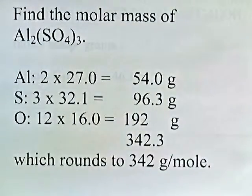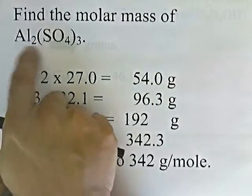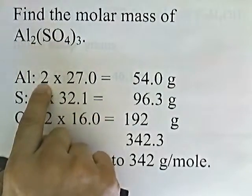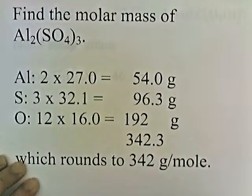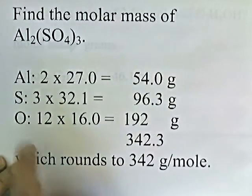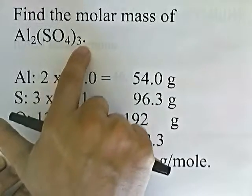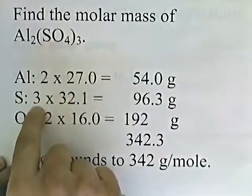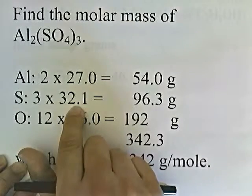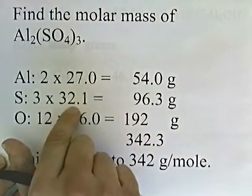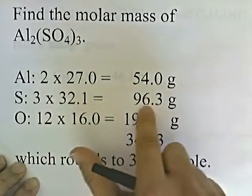Let's find the molar mass of aluminum sulfate. There are two aluminums. On the periodic chart, aluminum has a mass of 26.982, but rounded to three significant figures that becomes 27.0. Sulfur: there are three sulfurs — the three out front is distributed to the sulfur. Sulfur is listed as 32.066, which rounds to 32.1. Three times 32.1 gives 96.3.